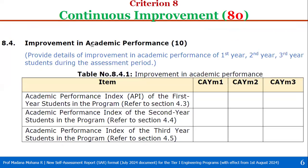Then 8.4, Improvement in Academic Performance, total 10 marks. In Criterion 4, Outcome Based Student Performance, we have seen first year, second year, and third year student academic performance. Then the improvement year to year, assessment year 1 to assessment year 3 — the latest assessment year is CYM1, then CYM2, then CYM3. Here you have to provide details of improvement in academic performance of first year, second year, and third year students during these three assessment years.